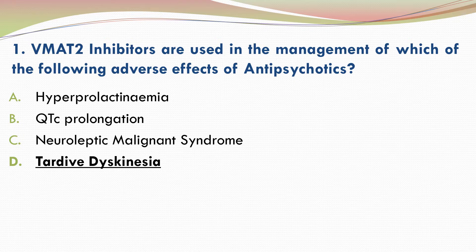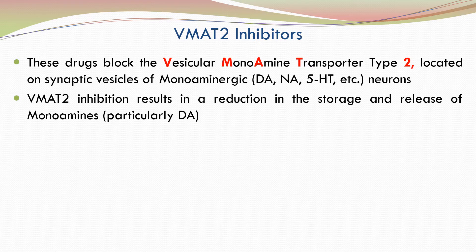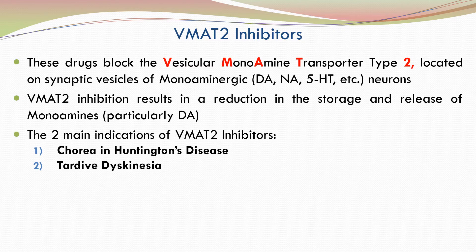VMAT2 inhibitors are used in the management of tardive dyskinesia, which is a major adverse effect caused by long-term use of antipsychotics, especially first-generation antipsychotics. VMAT2 inhibitors block the vesicular monoamine transporter type 2 located on synaptic vesicles of monoaminergic neurons, including dopaminergic, noradrenergic and serotonergic neurons. VMAT2 inhibition results in a reduction in the storage and release of monoamines, particularly dopamine. The two main indications of VMAT2 inhibitors are chorea in Huntington's disease and tardive dyskinesia.